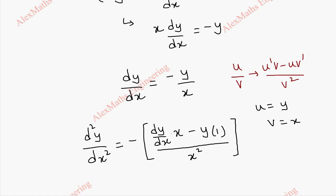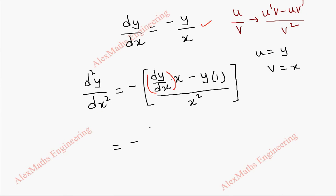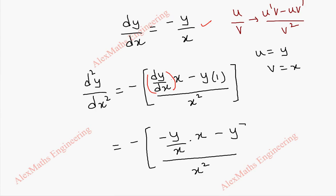Now in place of dy by dx we substitute minus y by x. So this becomes: minus, then minus y by x times x minus y, whole divided by x square. We can cancel x, and it becomes minus 2y. With the minus sign outside, it becomes plus 2y by x square.